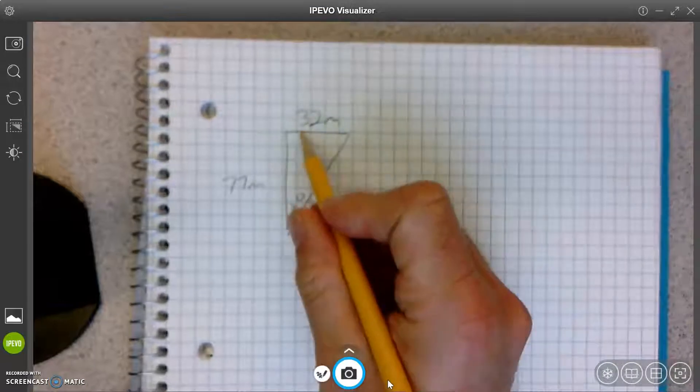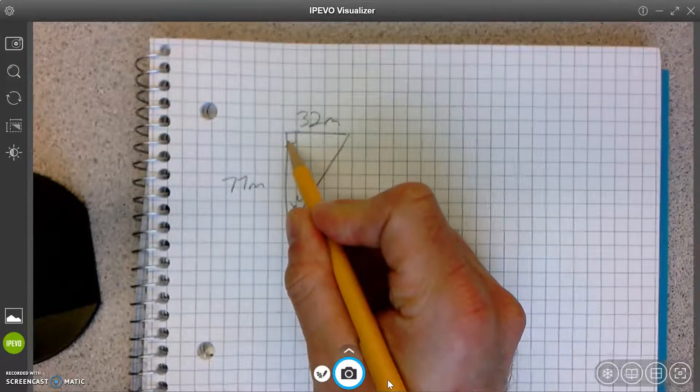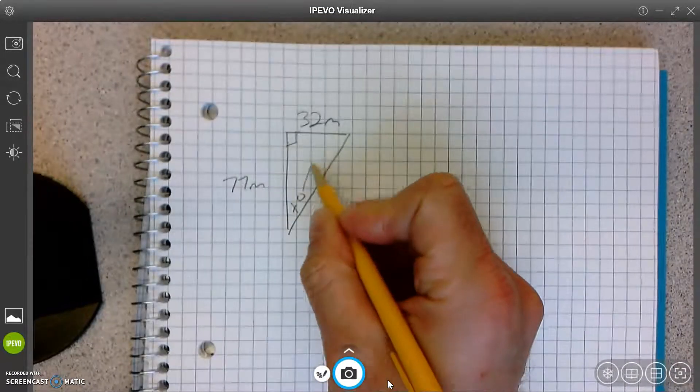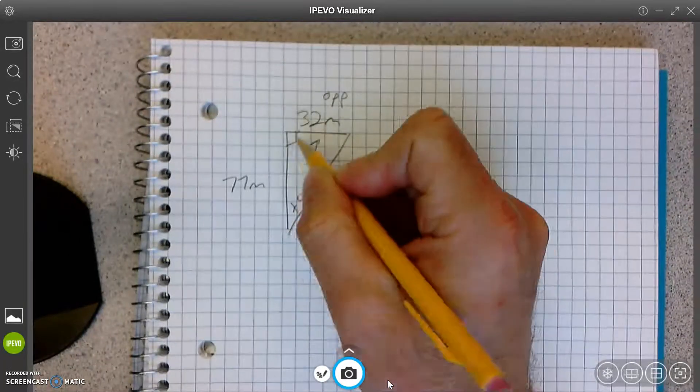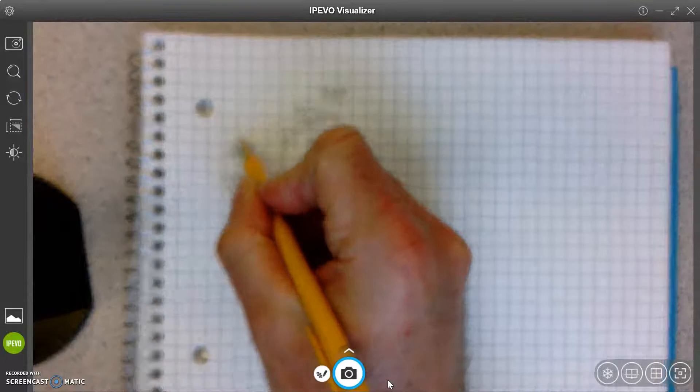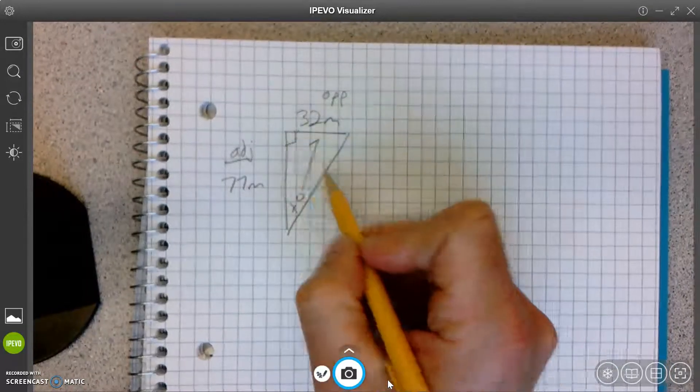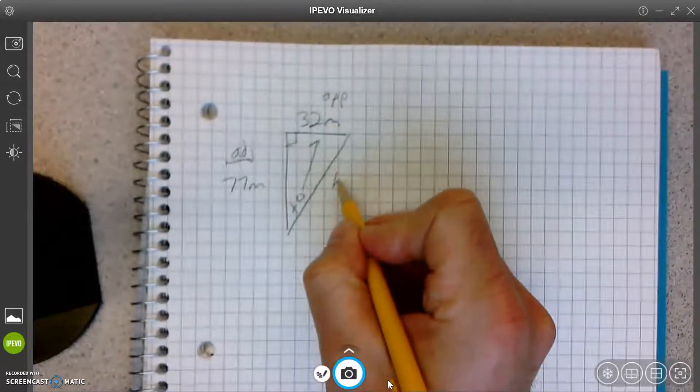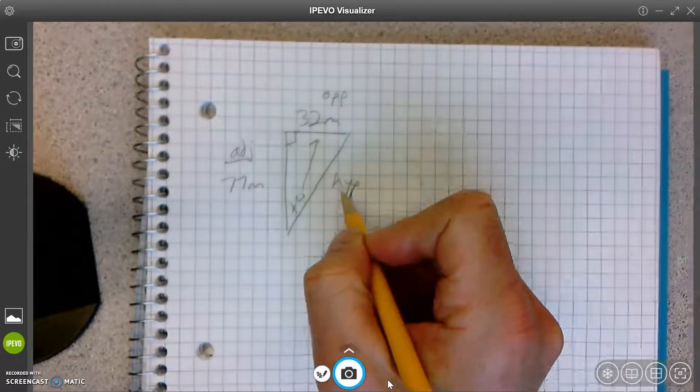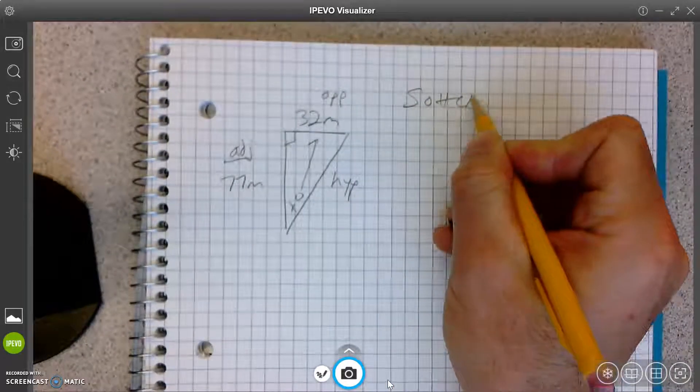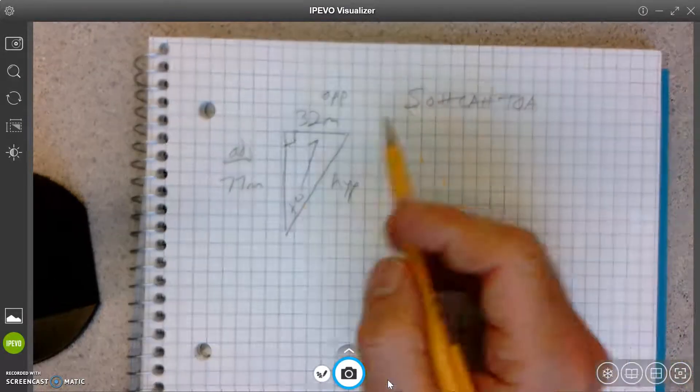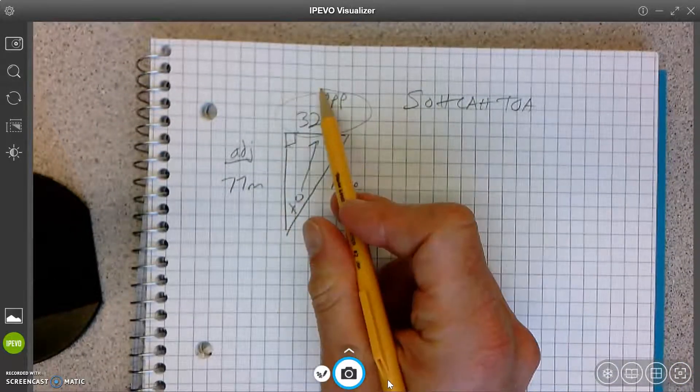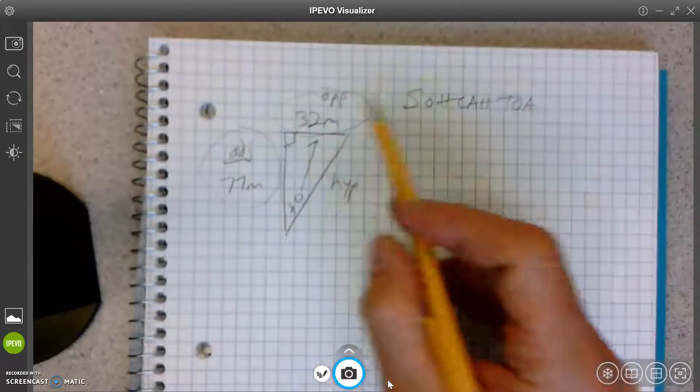Okay, so I'm going to use SOHCAHTOA because I have a right triangle. So this is going to be the opposite. Yeah. What's this side going to be? Yeah, the adjacent. Right here across on the right angle is the hypotenuse. There we go. So I'm going to write SOHCAHTOA right there. Okay. Okay, so I have opposite, 32, and I got adjacent, 77.